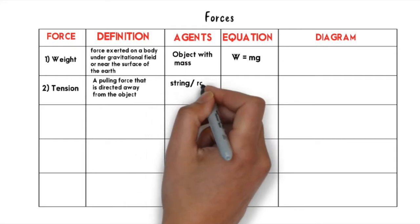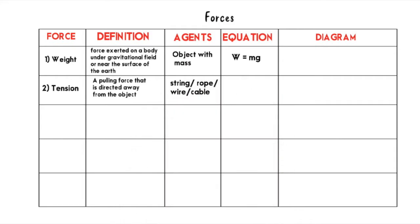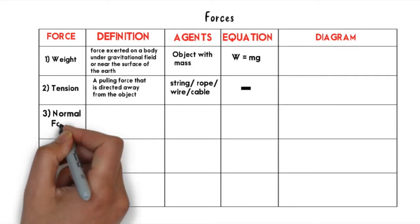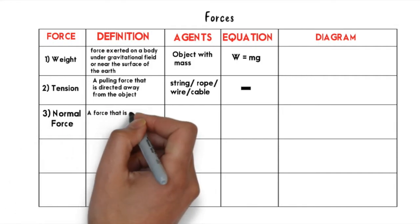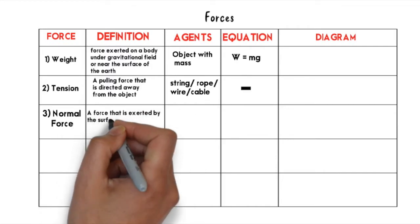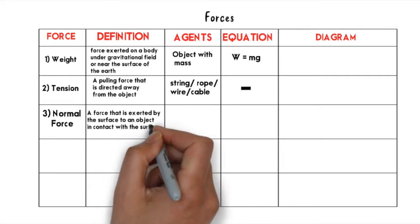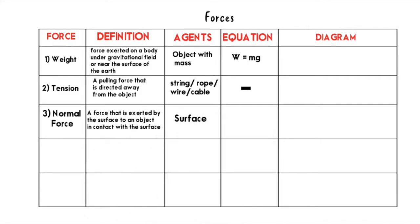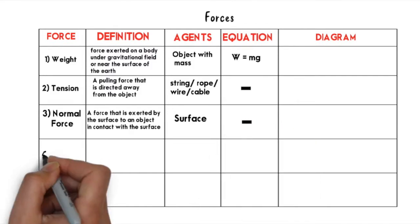There is no specific equation to calculate the value of tension. The third force is normal force, which is a force exerted by the surface on an object in contact with it. The agent is the surface itself. Similarly, there is no exact equation to calculate the normal force directly.